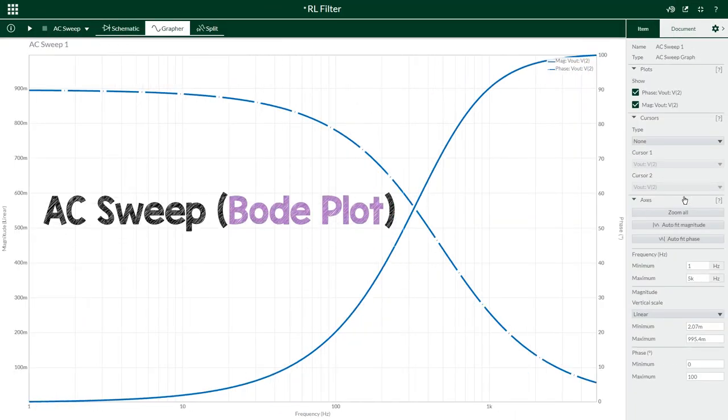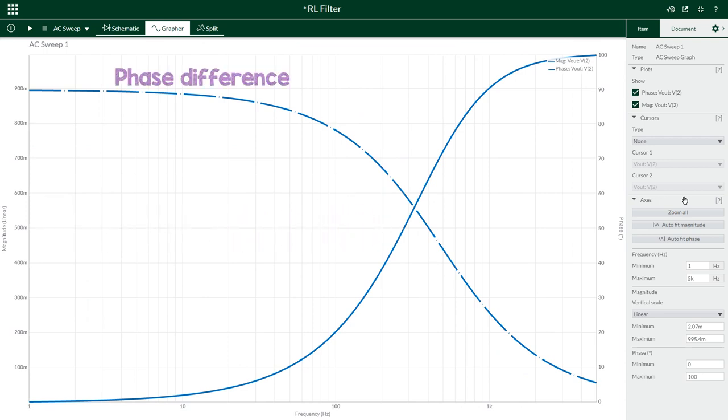Click simulate and the bode plot gives us phase and output magnitude against frequency, where the maximum output value is 1, i.e. 100%.